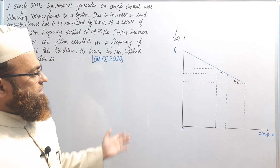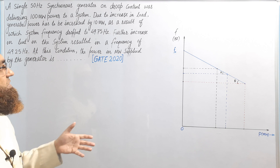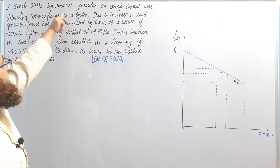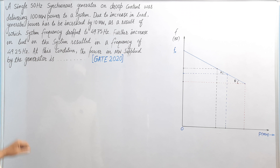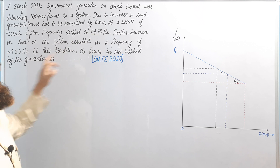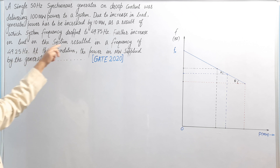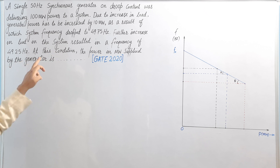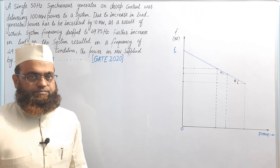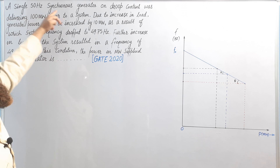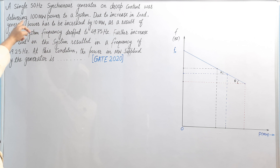As we know, when active power demand on a generator increases, its frequency will decrease. We are discussing the case of a single synchronous generator. Further increase in load in the system resulted in a frequency of 49.25 Hz, which is lesser than 49.75 Hz as we have further increased load. At this condition, the power in megawatt supplied by the generator is what we need to find — that is, when frequency has dropped to 49.25 Hz.